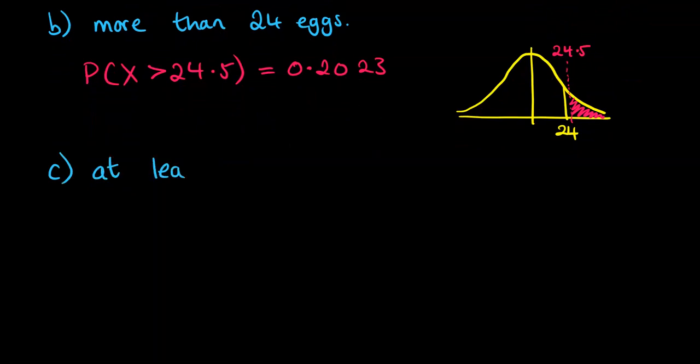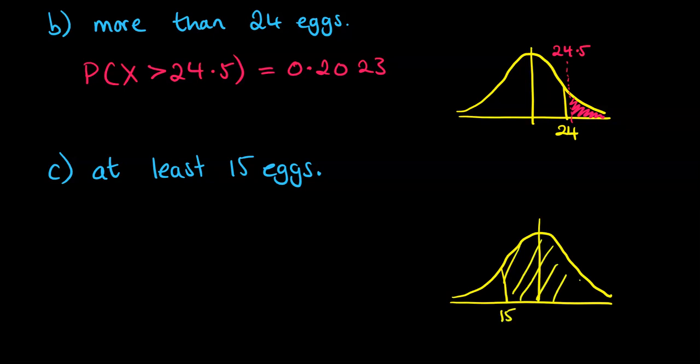Right, what about at least 15 eggs? I'm trying to use all the different ways that this could be asked so you can interpret these ones. So at least 15 means we are going to include 15 and go above the 15, as in we want more than 15, right? So we've got this kind of picture here.